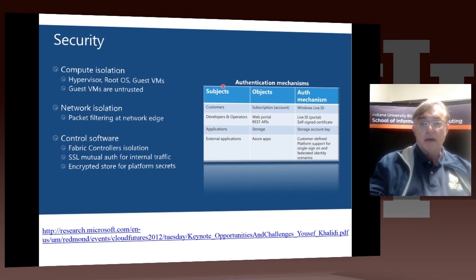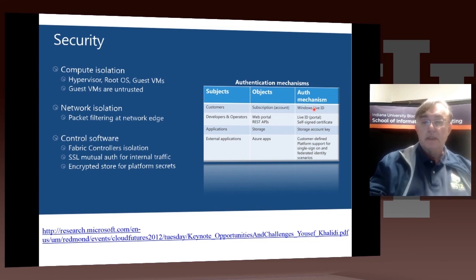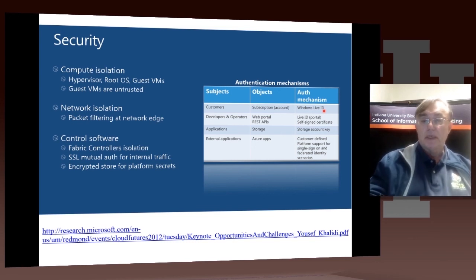Here we have the various types of entities, what they're dealing with, and the authorization mechanisms. Customers have their favorite ID — on Windows it's Live ID, on Google it will be your Google Plus login. And you get a key which allows you to access your storage and things like that.